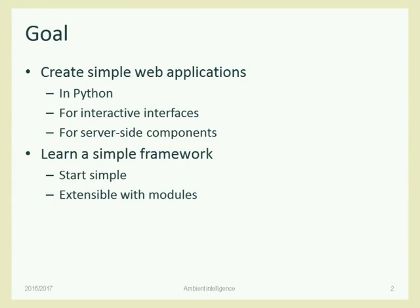If you have two computers, how do they exchange information? A very effective, simple, and fast way to do that is reusing HTTP and using all the software we already have in web applications. For now, we'll start simple, creating a simple web application with the user interaction in mind. But later, we'll see that the server-side is also useful for letting computers exchange information — no browser or user connected, just a computer talking to another computer with the same HTTP protocol.